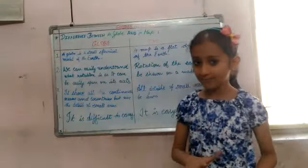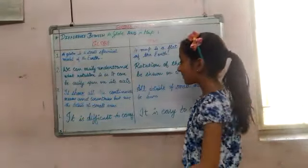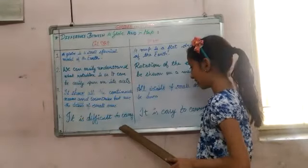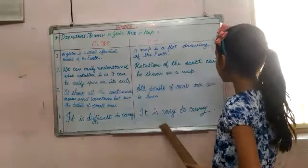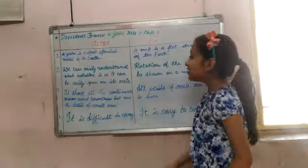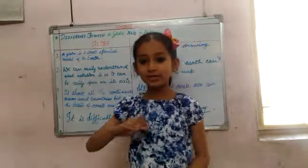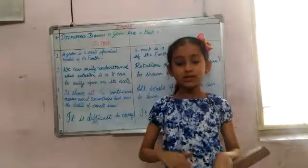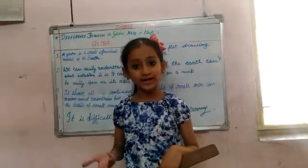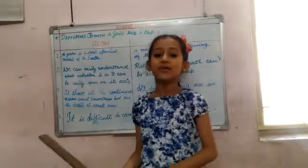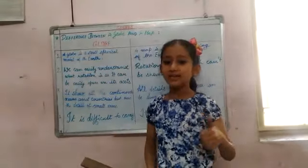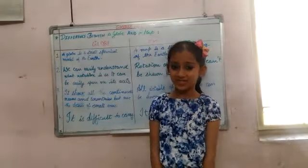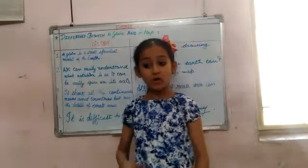Number four, the last difference: a globe is difficult to carry, while a map is easy to carry. You can fold the map and take it anywhere you want, but you cannot fold the globe and take it anywhere.